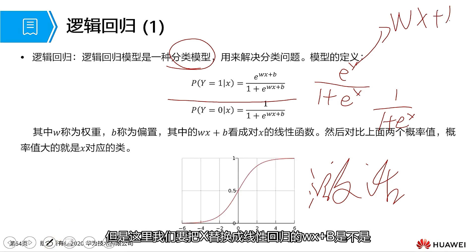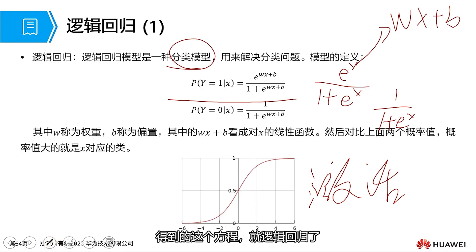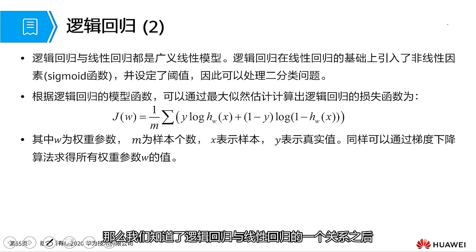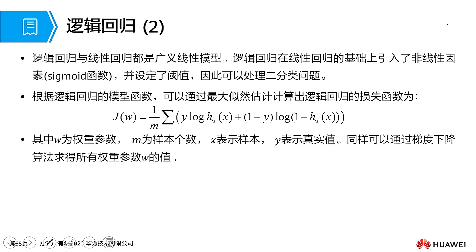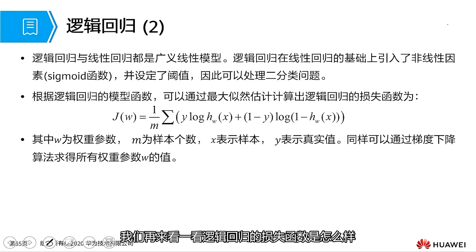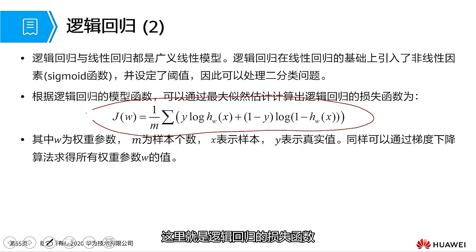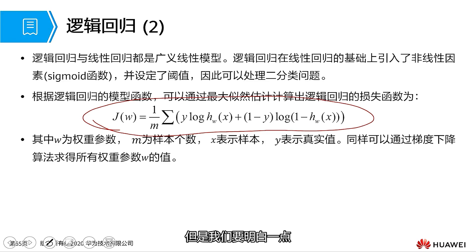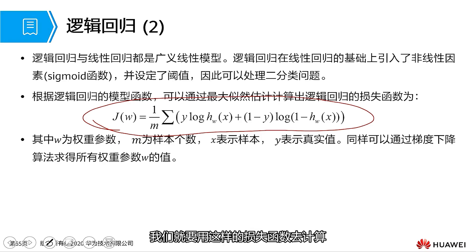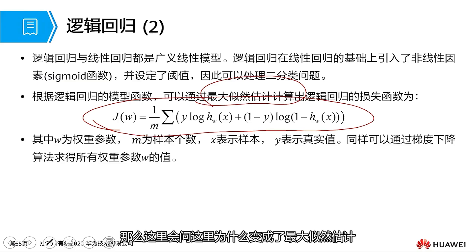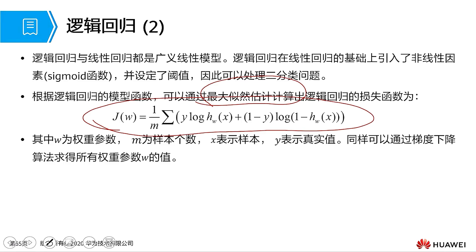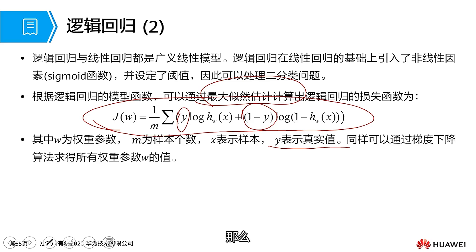Let's take another look at the loss function of logistic regression. Here is the loss function of logistic regression — it may be more complicated. However, we need to understand one thing: to obtain the optimal value of logistic regression, we use this loss function for calculation. The method used is maximum likelihood estimation. The y in front represents your true value, which is nothing but 1 or 0. The processing result after passing through the sigmoid activation function is also nothing but 1 or 0.